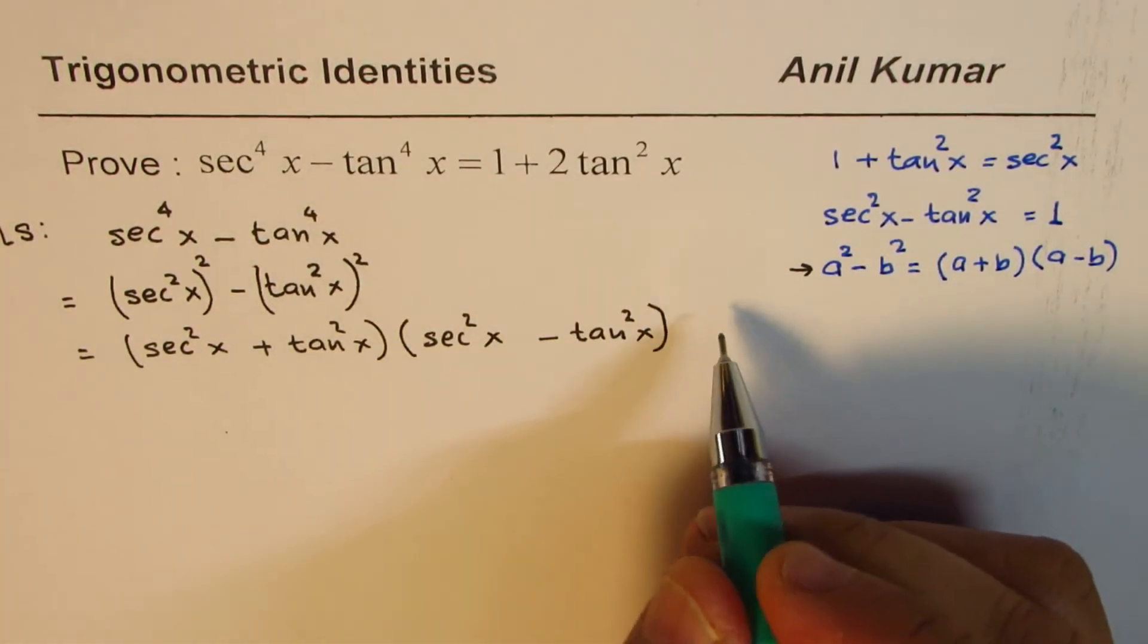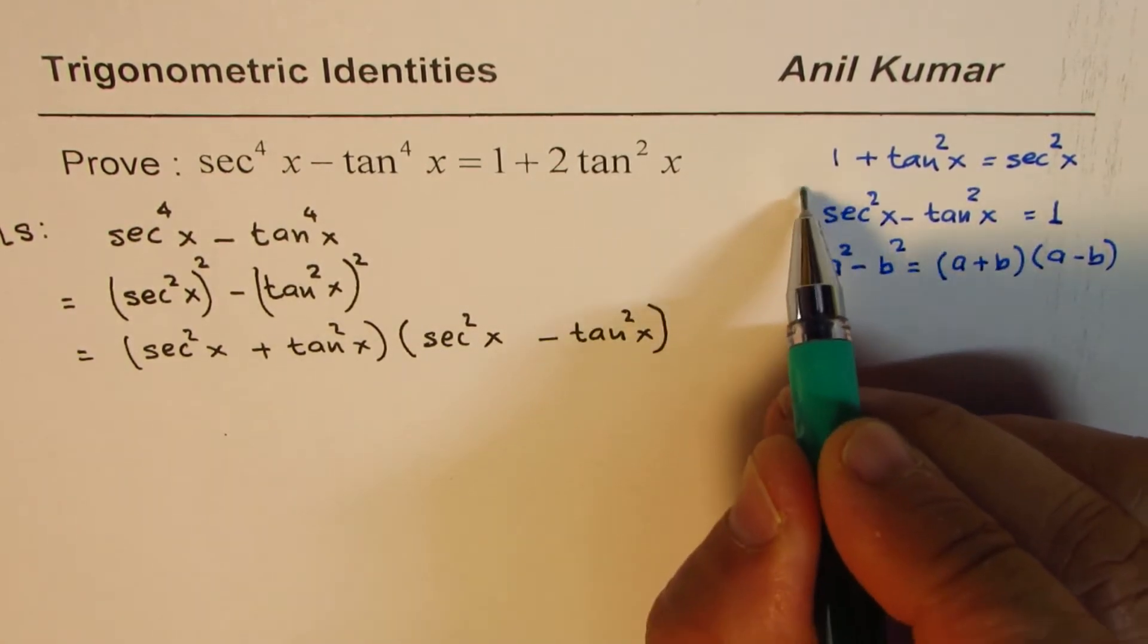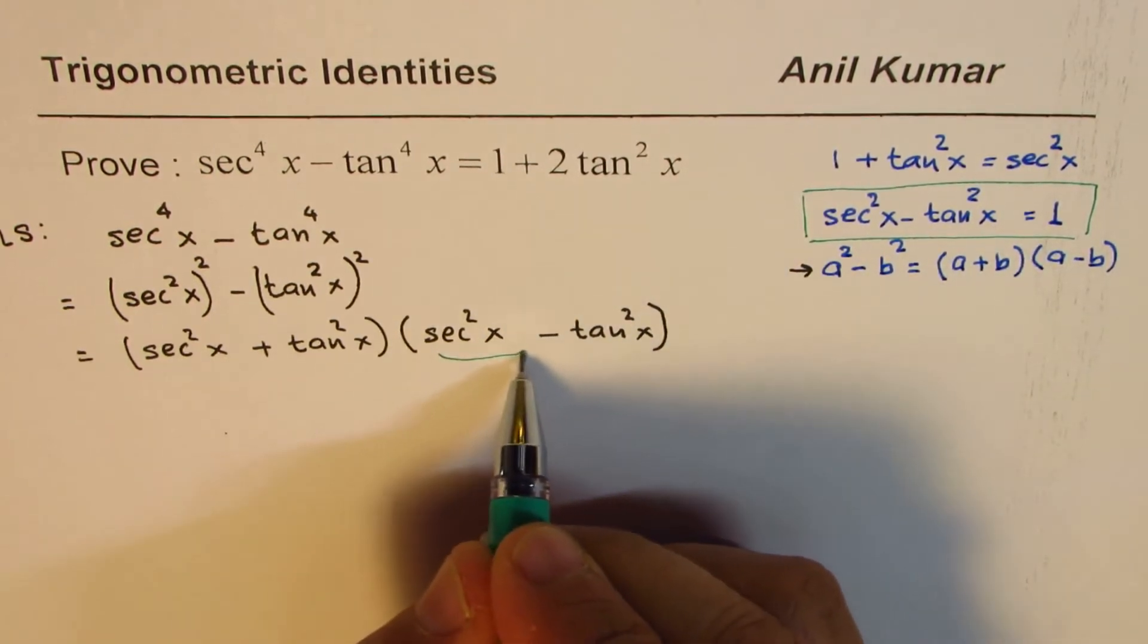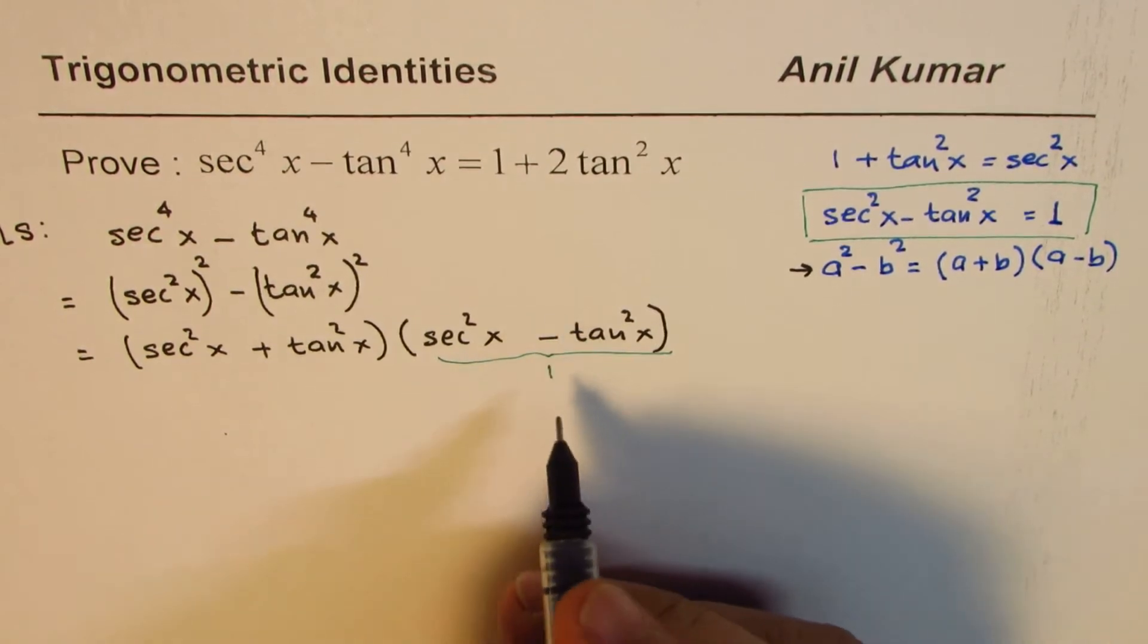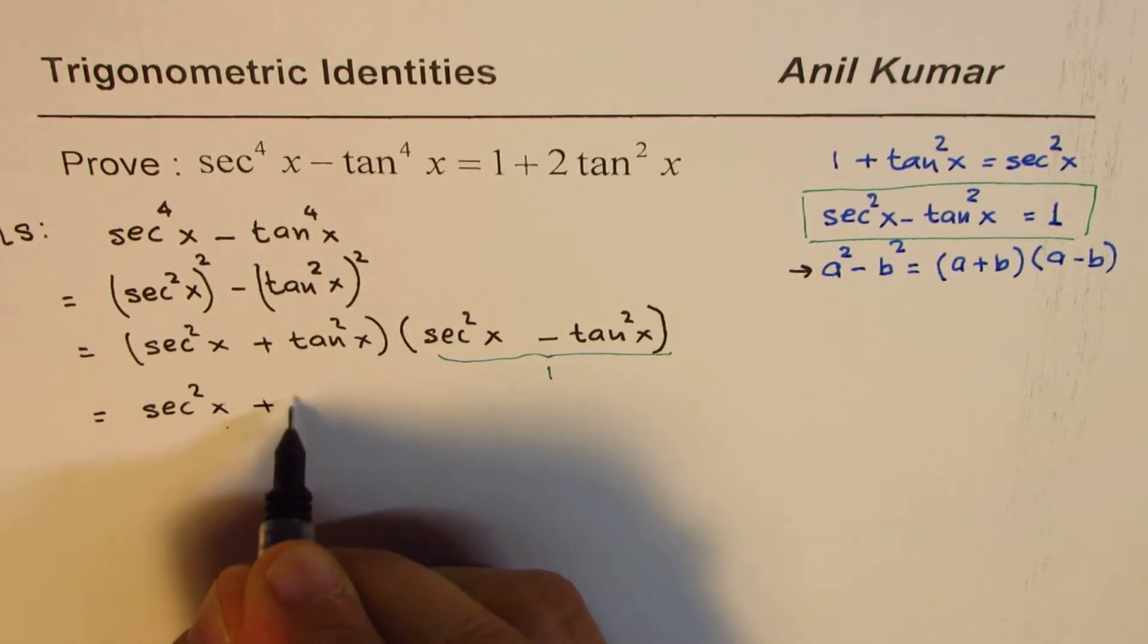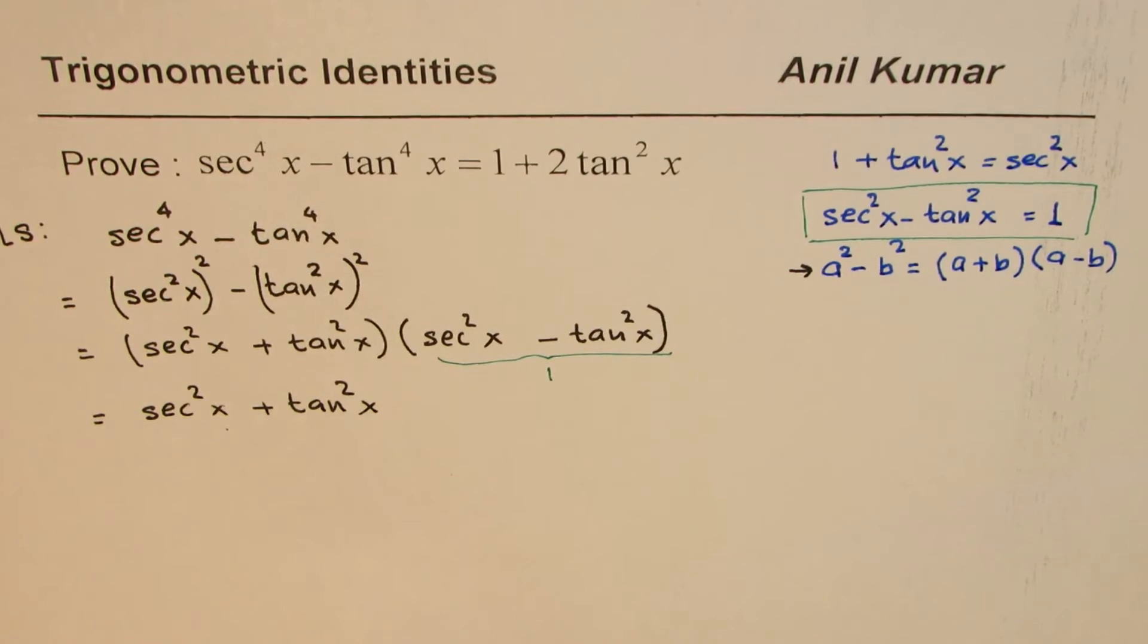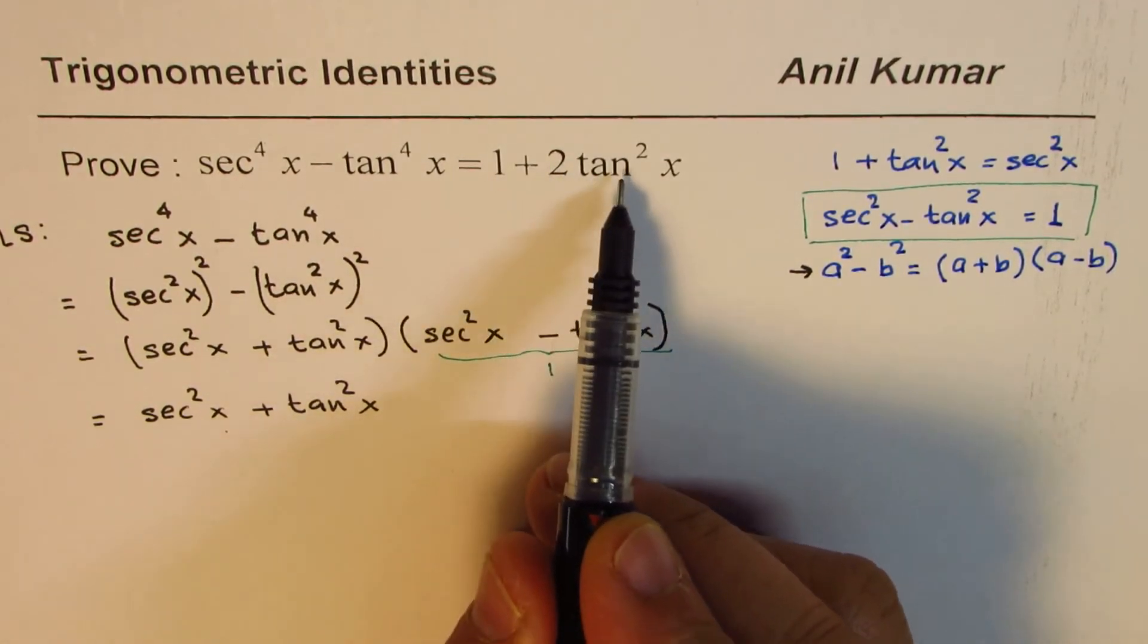And now you can see that secant square x minus tan square x is actually equal to 1. So substituting that, what we get on the left side is secant square x plus tan square x. Now what you need is to show that this equals 1 plus 2 tan square x.